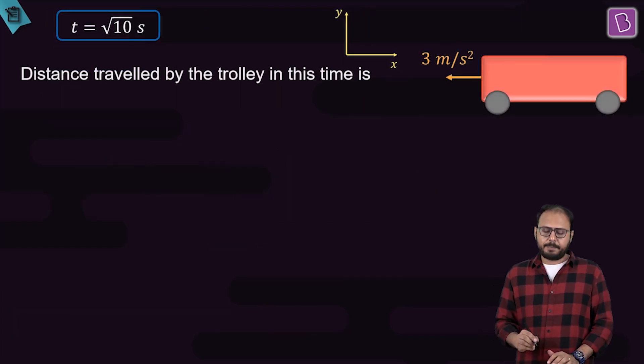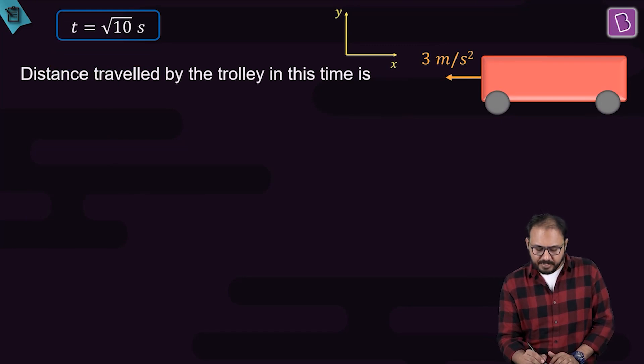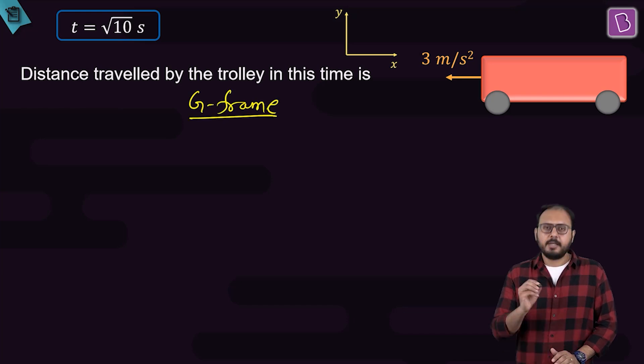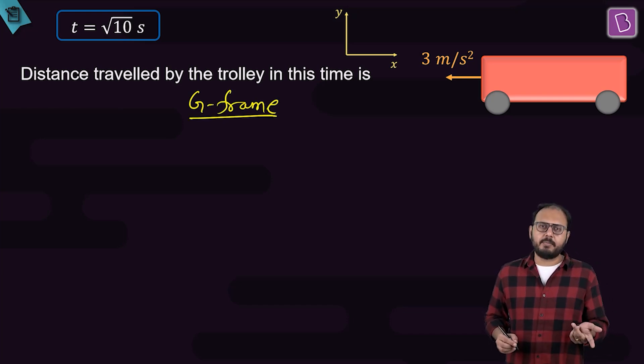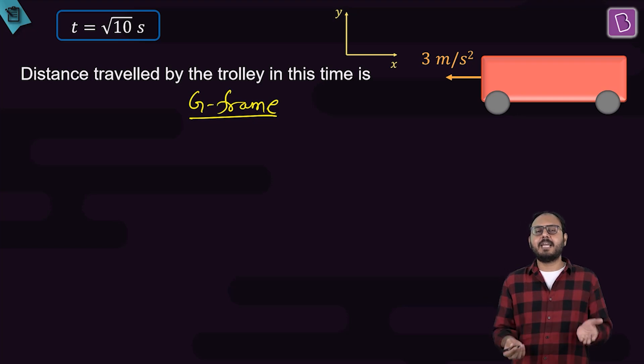That's very simple again. This time, apply x equal to ut plus half A t square on the trolley. Look at the trolley, but what frame you are in now? Ground frame. But sir, you found out root 10 seconds in trolley frame. Why will you use that value of time in ground frame? Come on, for the hundredth time. Time does not depend on the frame.